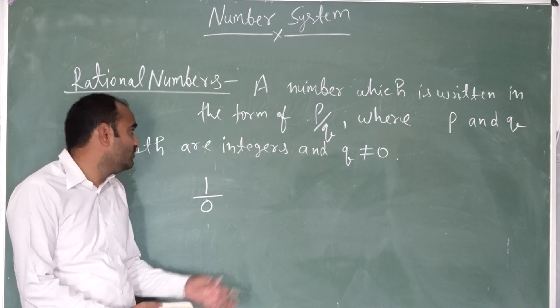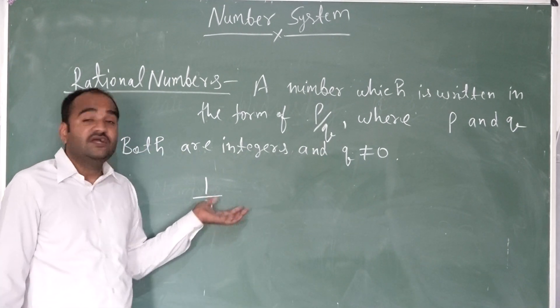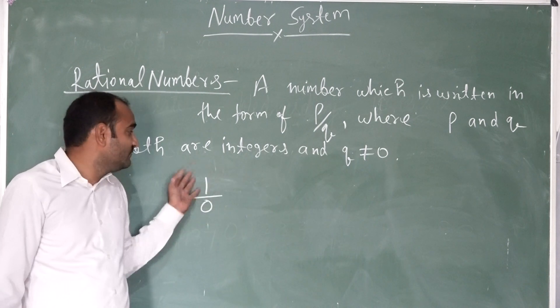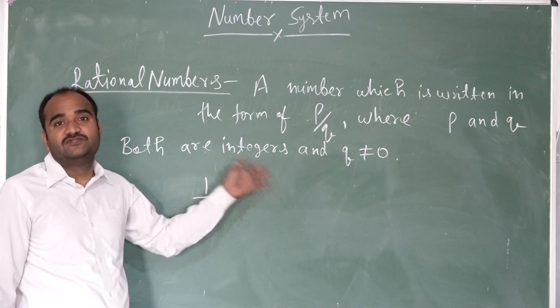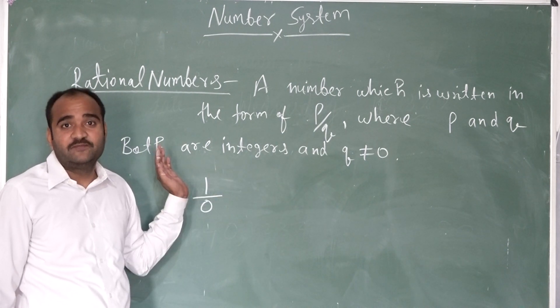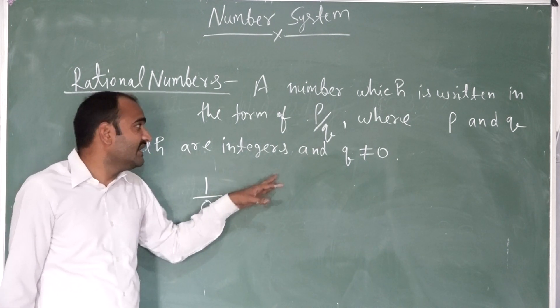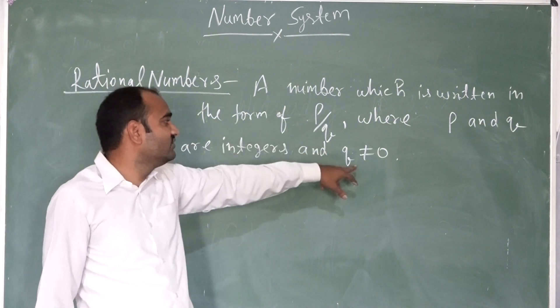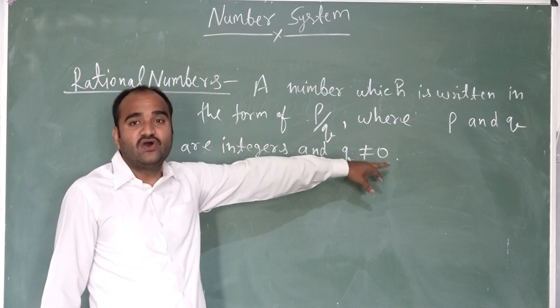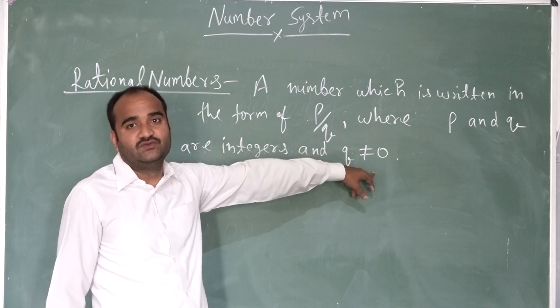If any number is divisible by 0, then this is not defined. You see, you have a condition where Q is not equal to 0.